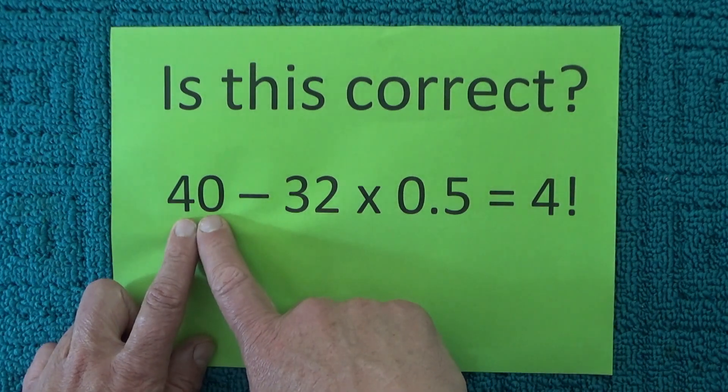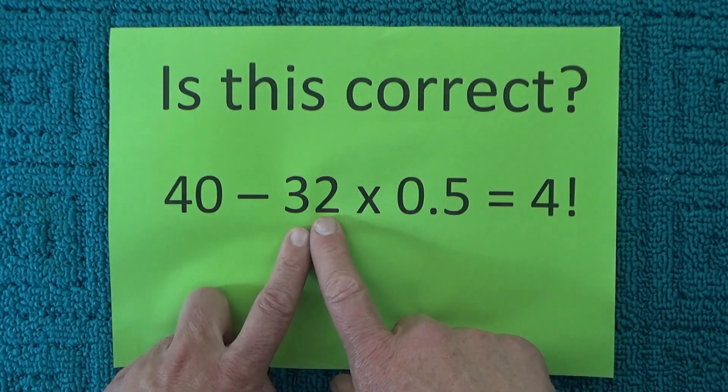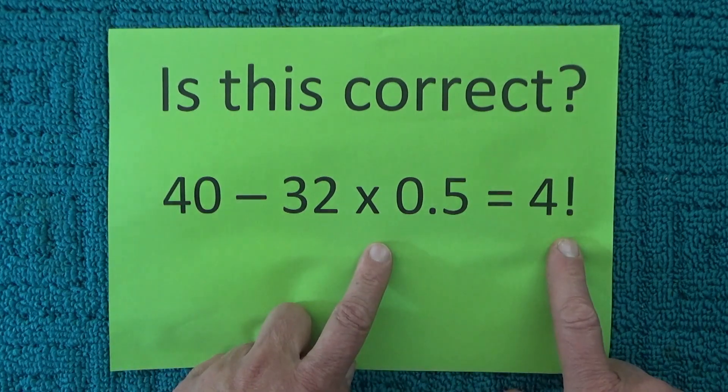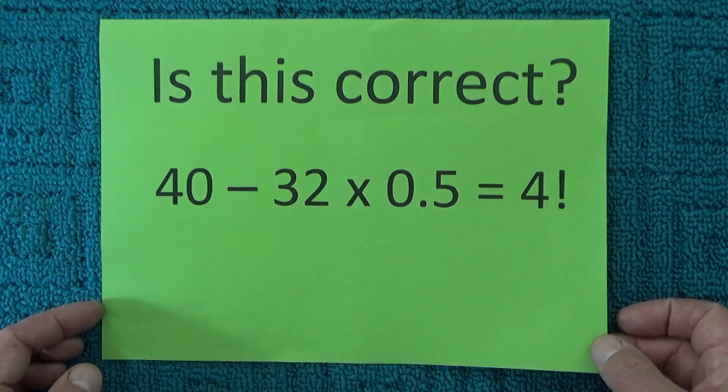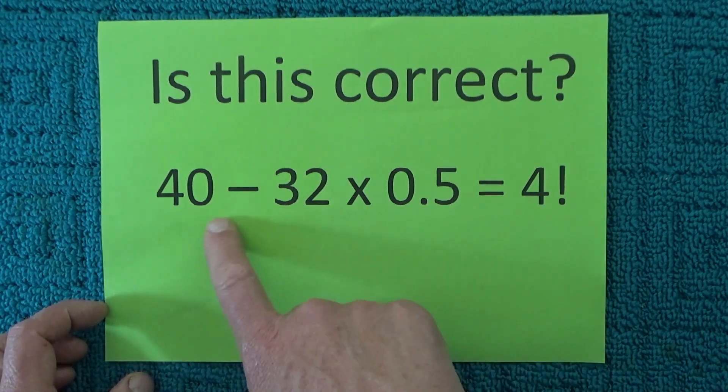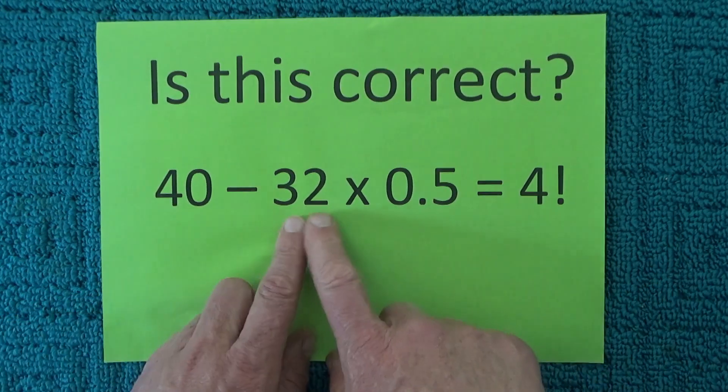When you first look at it, you think they've done 40 minus 32, which is 8, times 0.5 equals 4, which is not correct because you've got to do the multiplication before you do the subtraction.